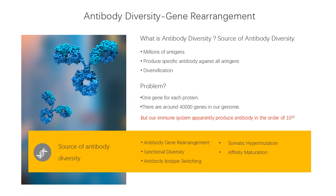There are five kinds of sources for providing antibody diversity. They are antibody gene rearrangement, junctional diversity, isotype switching, somatic hypermutation, and affinity maturation. Here we mainly detail the antibody gene rearrangement process and basic principles.